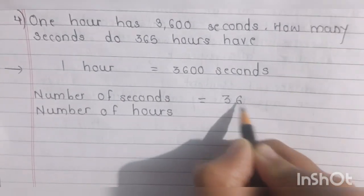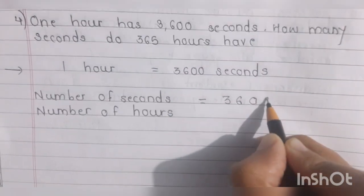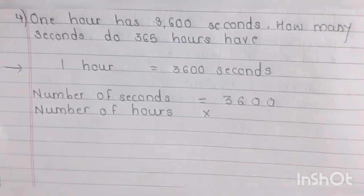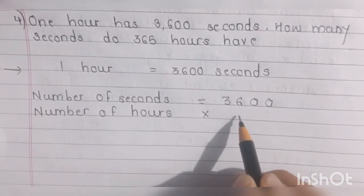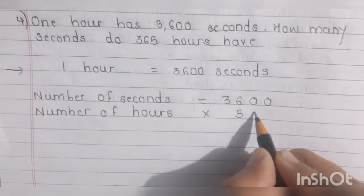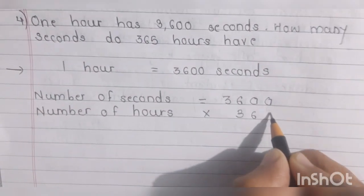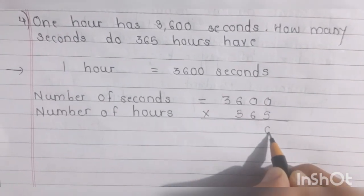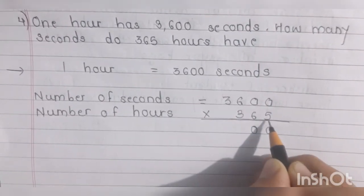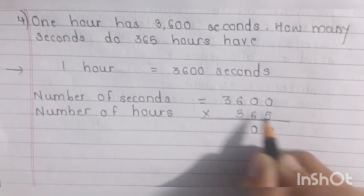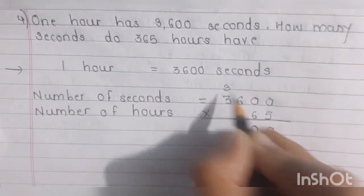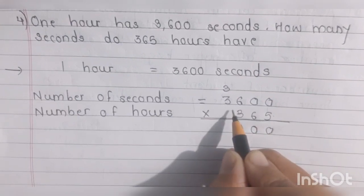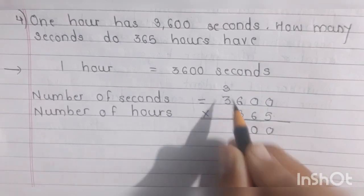3600 multiplied by the number of hours — they have given 365. Any number multiplied by zero the product is zero. 6×5=30, carry 3. 5×3=15, 15+3=18.